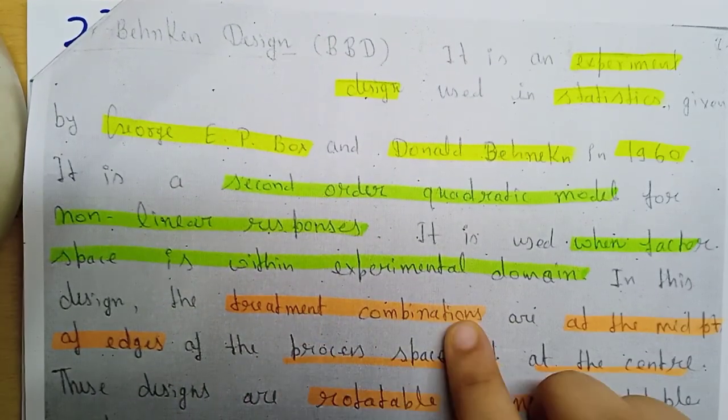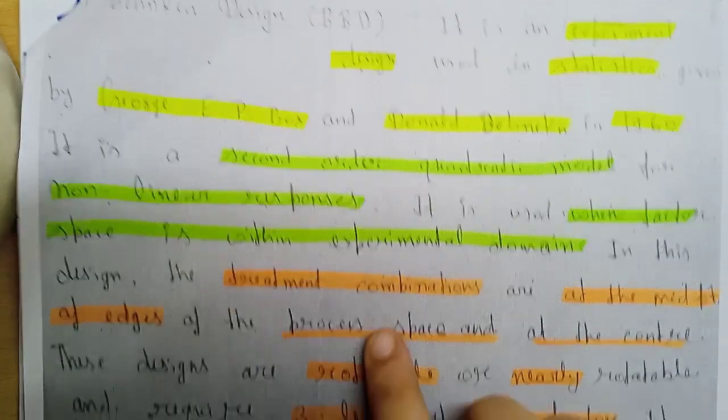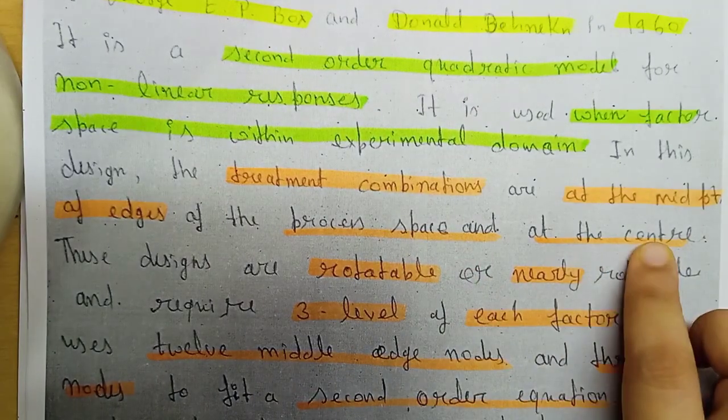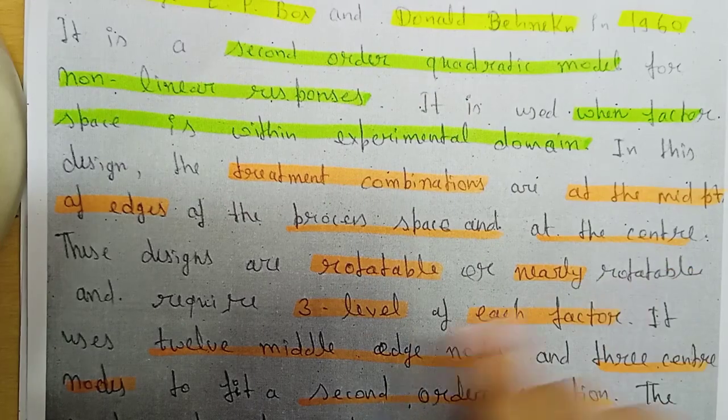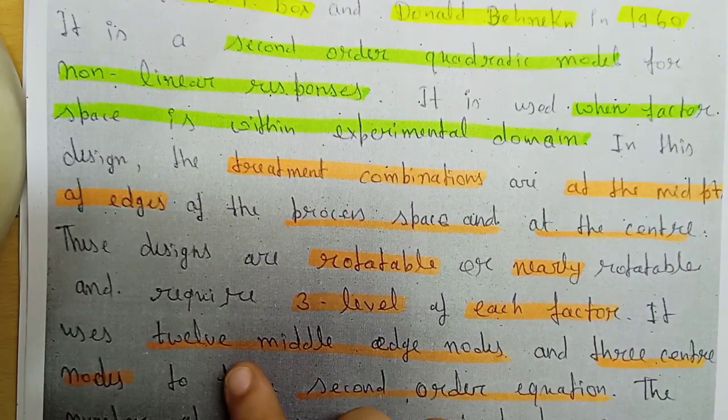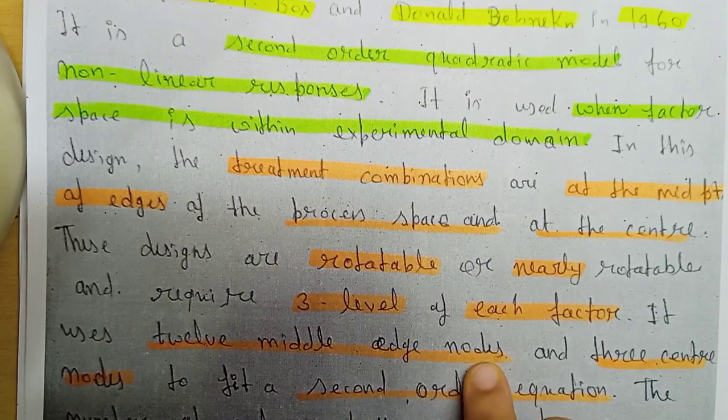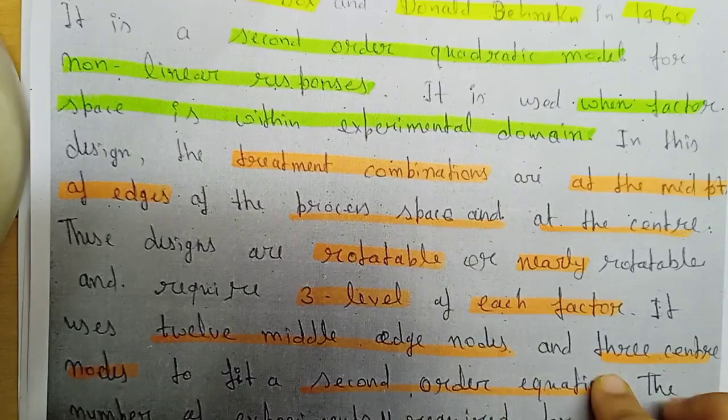The treatment combination is at the midpoint of the process space and at the center. This is rotatable or nearly rotatable and there are three levels in every factor. There are 12 middle edge nodes and 3 center nodes to fit the second order equation.